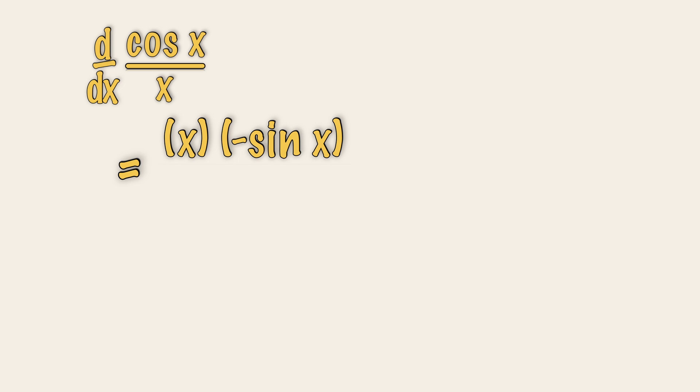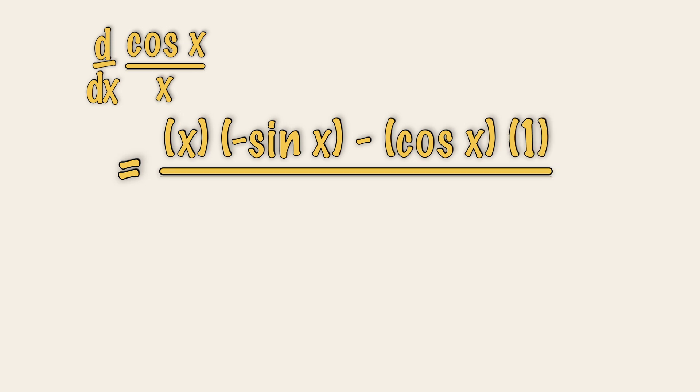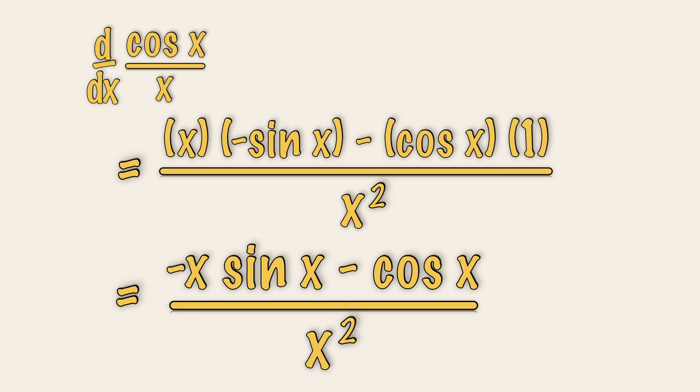In the quotient rule, we will introduce a minus sign. Keep the first part, which is cosine x. Differentiate the second part, which is 1 over square the denominator, which is x squared. Simplifying, we will then have minus x sine x minus cosine x over x squared.